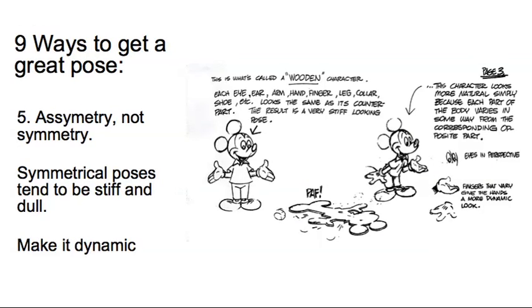Five, asymmetry, not symmetry. This is an important thing. If we take Mickey on the left, this is taken from the Illusion of Life. Mickey's in a rather stiff pose here, rather symmetrical, rather flat looking. But as soon as we throw him off the main axis, give a bit of line of action to his body, we make it more dynamic.